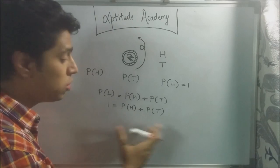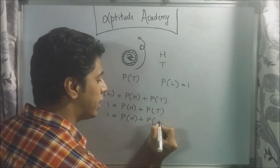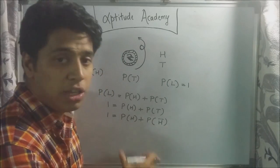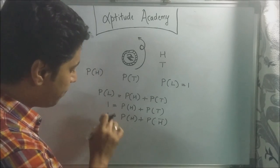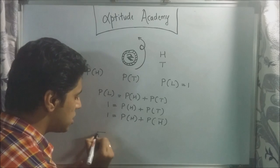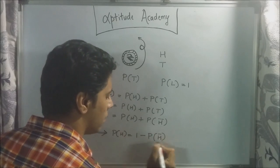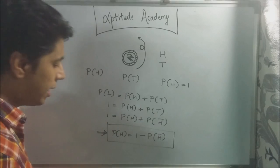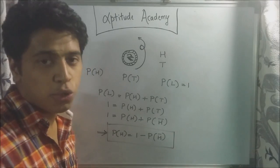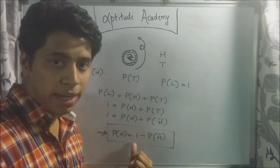Let's rewrite this equation so we can use it later. One is equal to P of H plus P of not H, or H-bar. What this means is 'not a head,' which is basically a tail. So your final equation is: P of H is equal to one minus P of H-bar. This is very important. In some problems, P of H is hard to find directly, so what we do is find P of H-bar, subtract it from one, and that is your final answer.